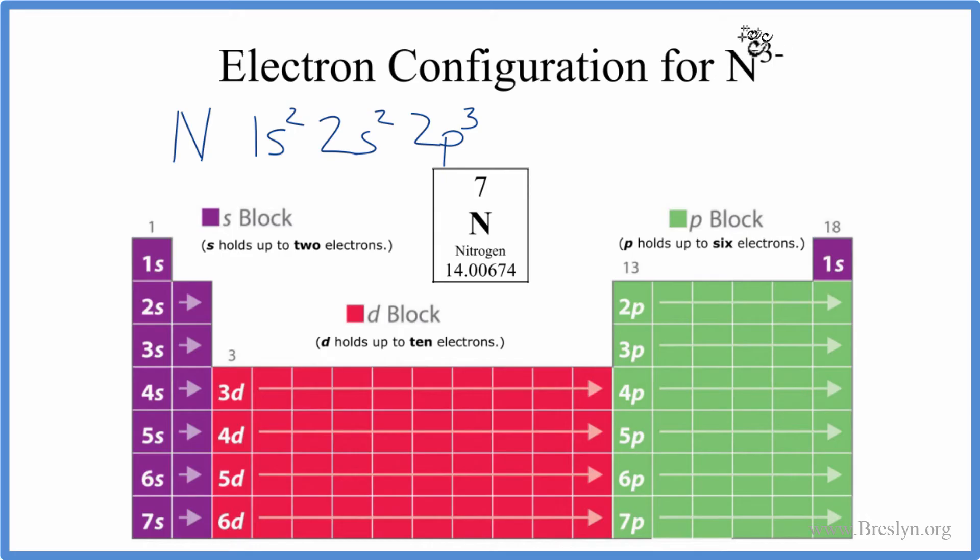But we wanted the nitride ion, N3-. So when you see a negative sign up here, that means that this has gained an electron. In this case, we have a three before the negative sign - we have three extra electrons. So we'll add those right here, the p will then have six electrons, and it'll be full.